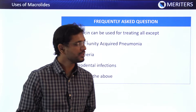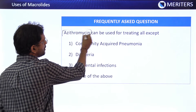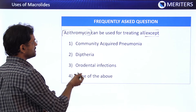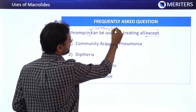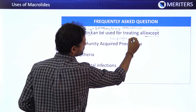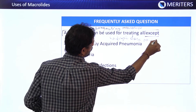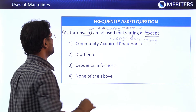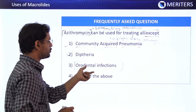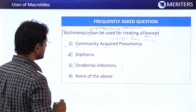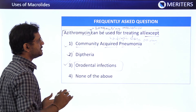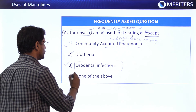Practice question: Azithromycin, which is a macrolide, can be used for treating all of the following except — which condition cannot be treated with azithromycin? Azithromycin is a long-acting macrolide and a single dose per day is sufficient. It can be used for community-acquired pneumonia, diphtheria, and orodental infections. Since all listed conditions can be treated by azithromycin, the correct answer is none of the above.